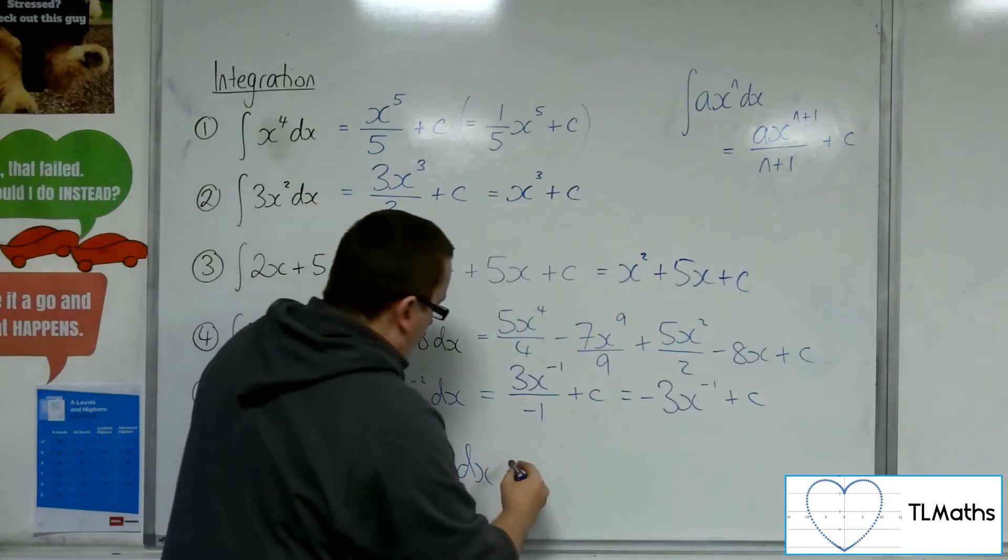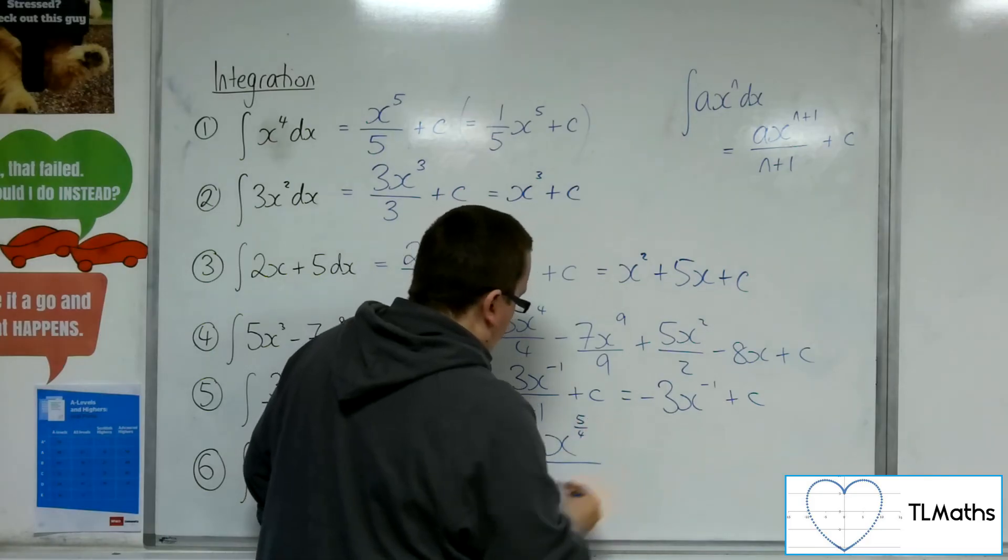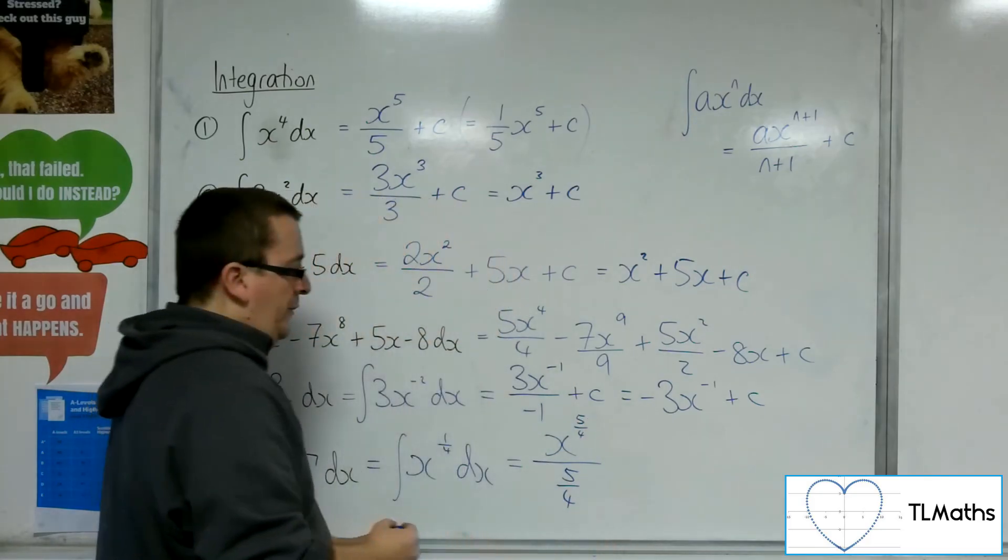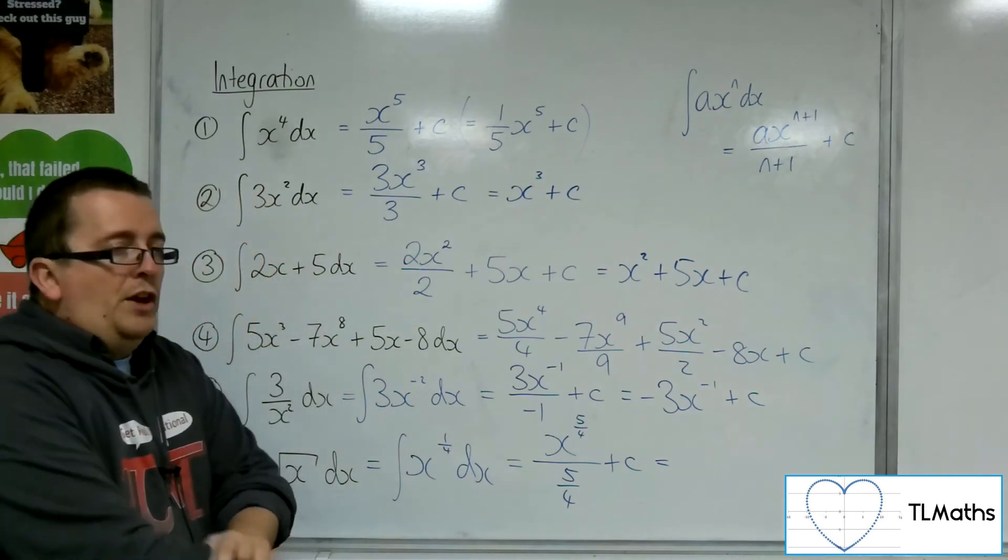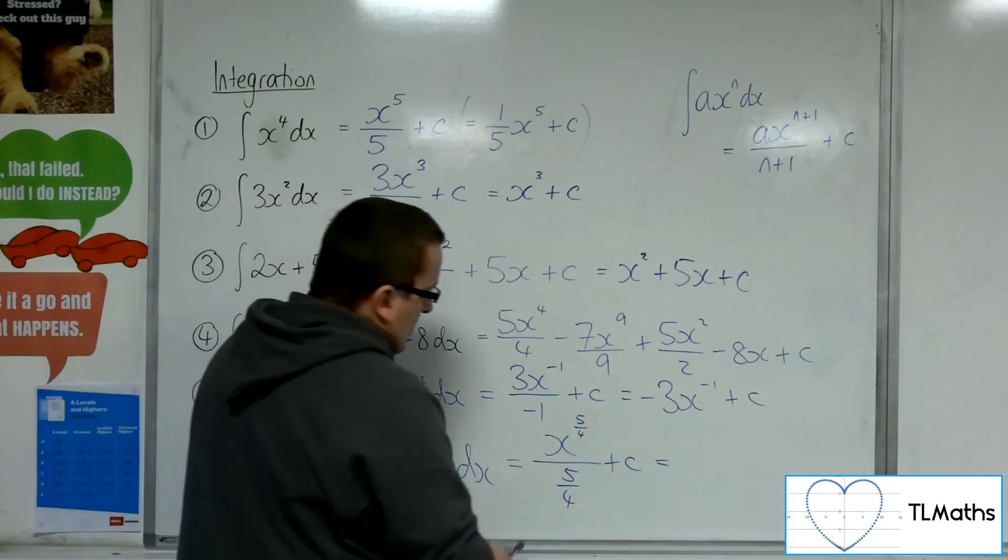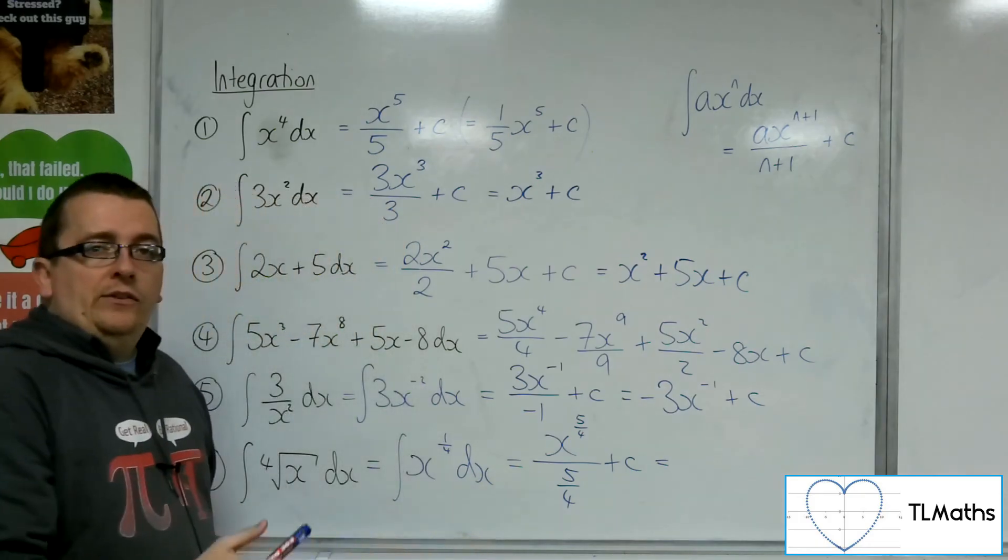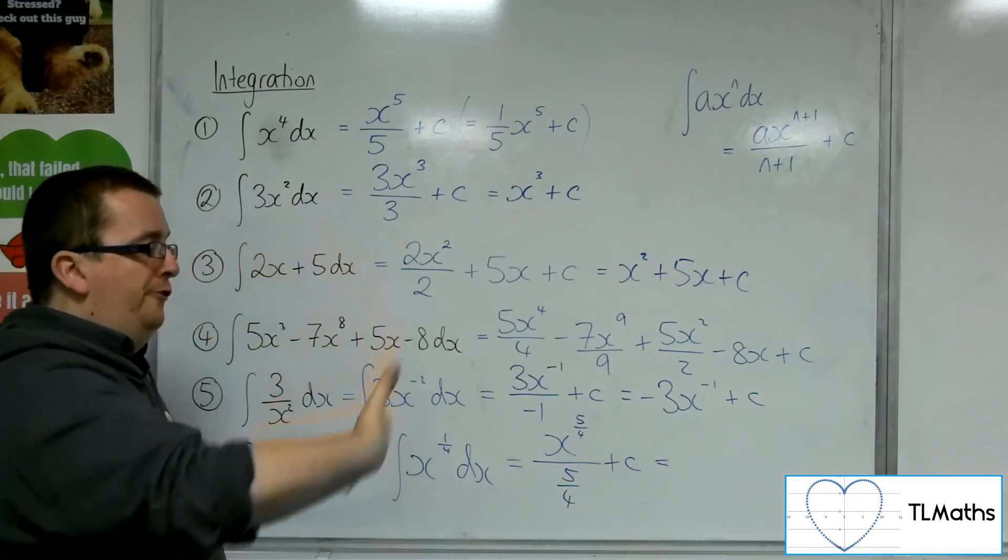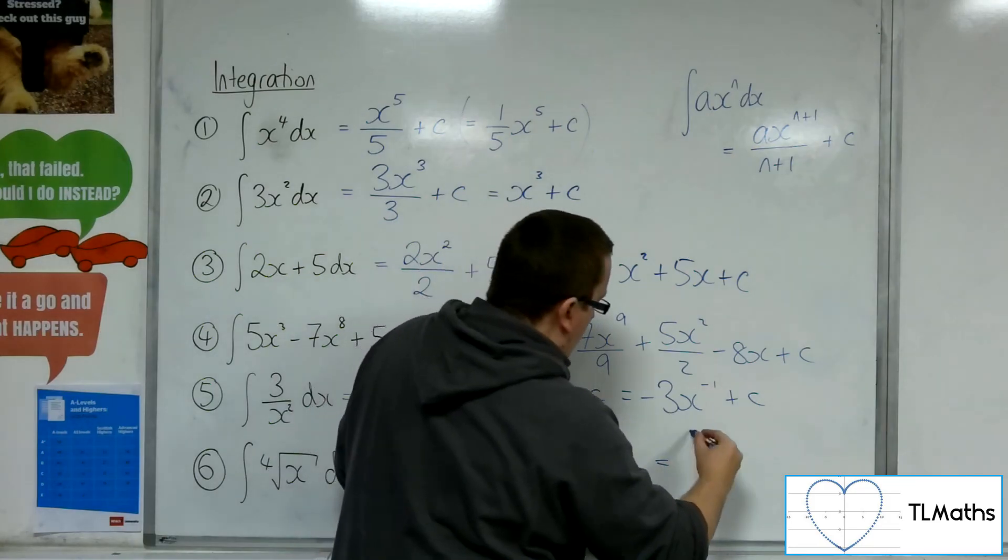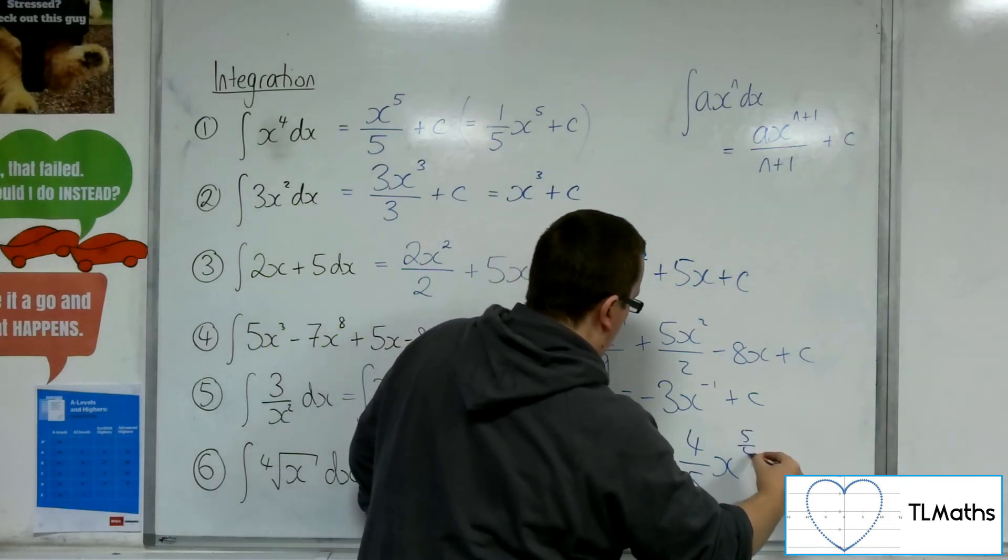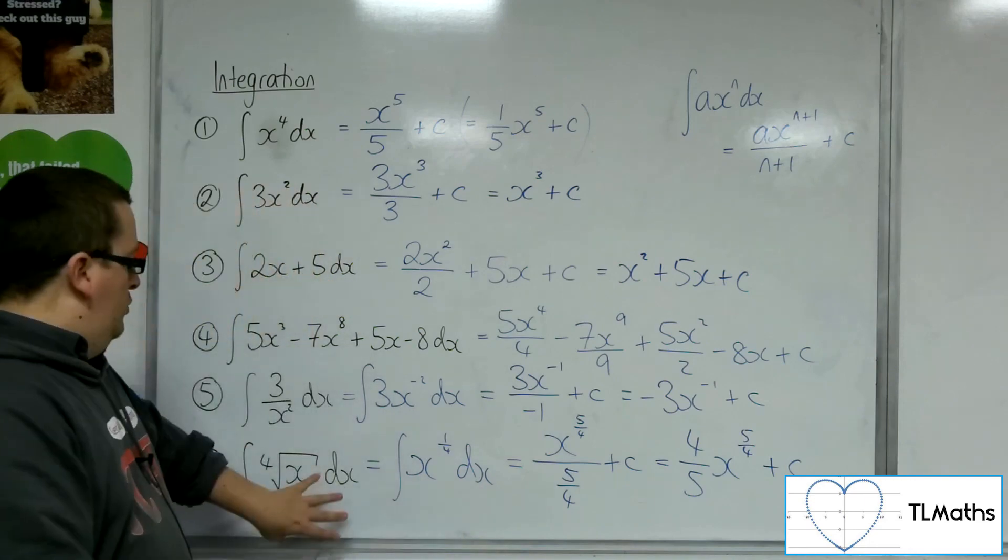So, I'm going to add 1 to the power. Now, 1 quarter plus 1 is 5 quarters. And I'm going to divide by the new power, the 5 quarters. And I've got that plus c constant of integration. Now, that's the answer, but I don't want to leave it like that. I don't want a fraction within a fraction. I want to tidy this up. Now, the coefficient in the numerator is just 1. 1 divided by 5 quarters is 1 times 4 fifths. Dividing by a fraction is the same as multiplying by the reciprocal. So, this is the same as 4 fifths x to the 5 quarters plus c. And that is the answer to number 6.